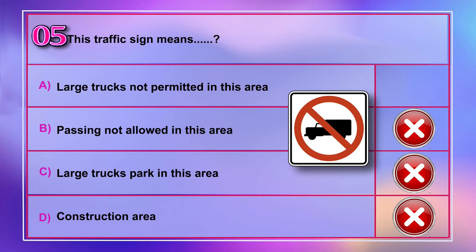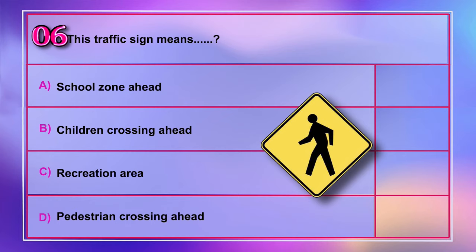Question number 6: This traffic sign means A) school zone ahead, B) children crossing ahead, C) recreation area, D) pedestrian crossing ahead. Correct answer is D: pedestrian crossing ahead.